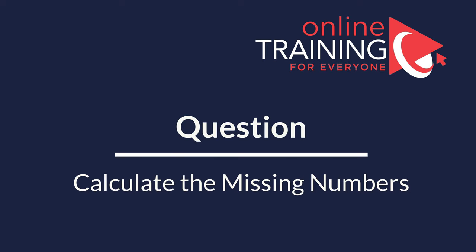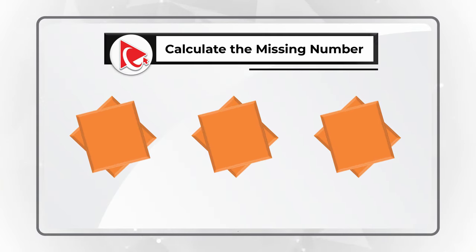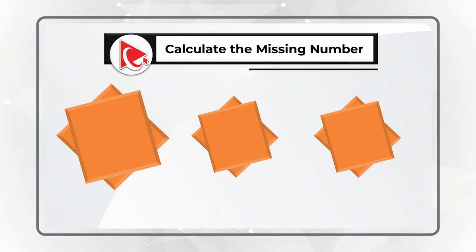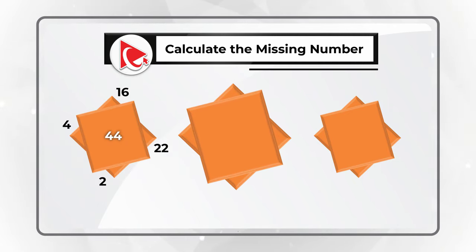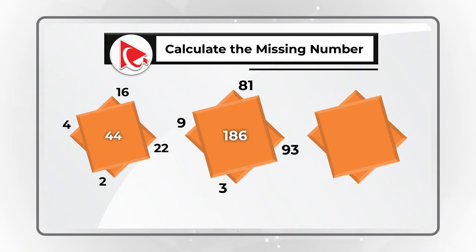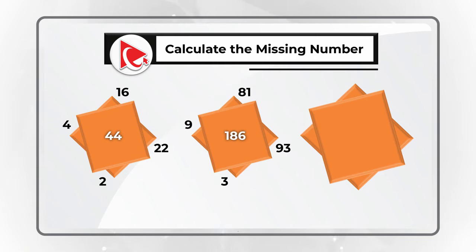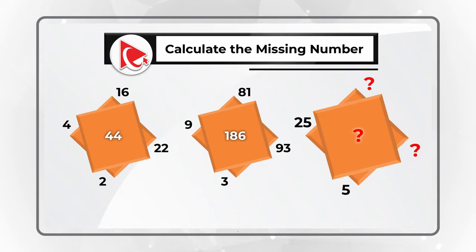Here's an amazing question. You're presented with three sets of diamonds, each containing numbers outside and inside. The first diamond has numbers 2, 4, 16, 22, and 44 in the middle. The second set has 3, 9, 81, 93, and 186 inside. The last set has 5 and 25 visible, with three numbers missing that you need to select.